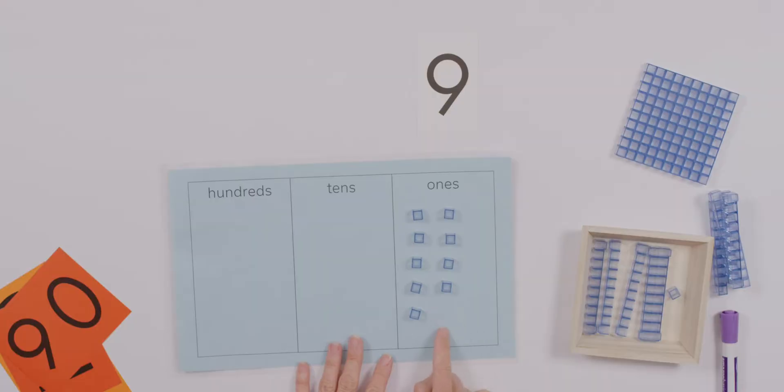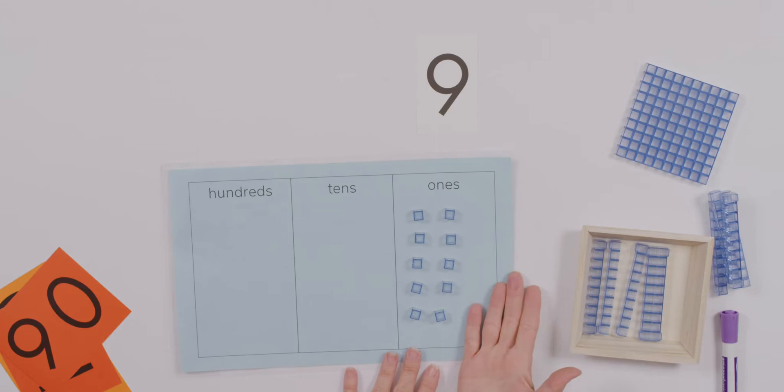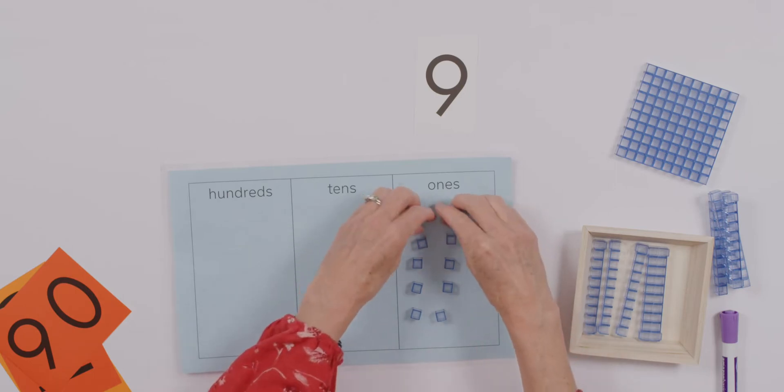There we go. What I want us to think about is what happens if I have one more unit that I want to put onto my mat. Let's try and see what happens. Oh my goodness, the alarms are going off because ten cannot be in the ones column. We can only have nine.